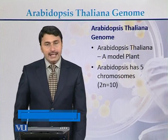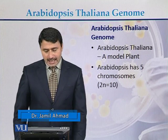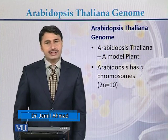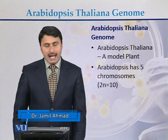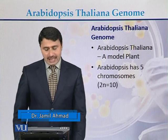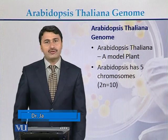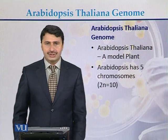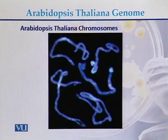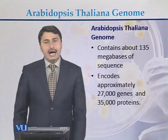Arabidopsis thaliana is a model plant. Arabidopsis has five chromosomes; in the case of diploid, the chromosome number is 10. These are the five chromosomes of Arabidopsis thaliana.